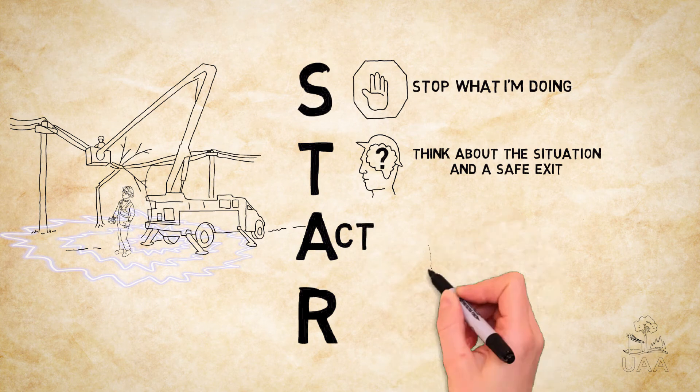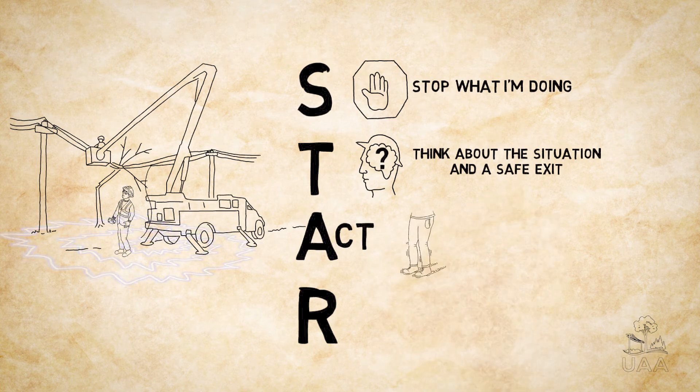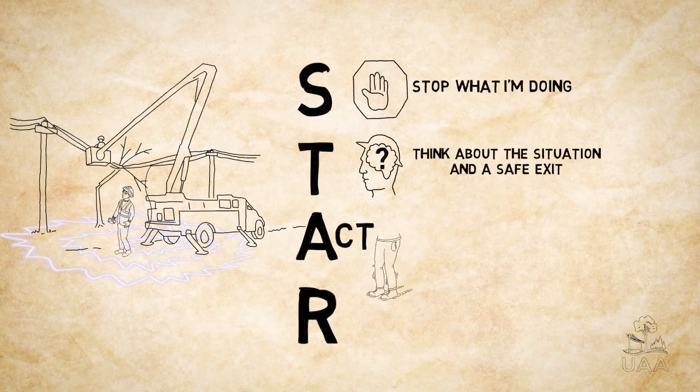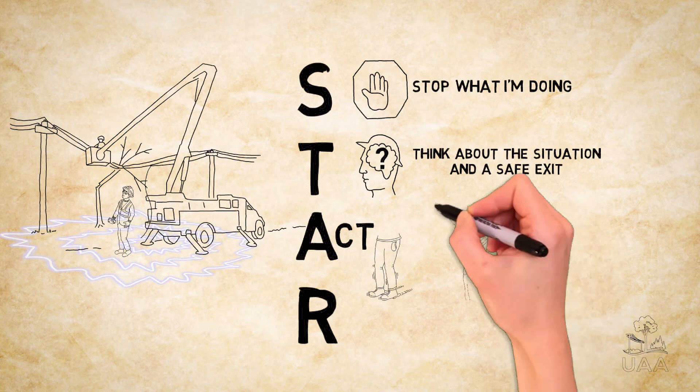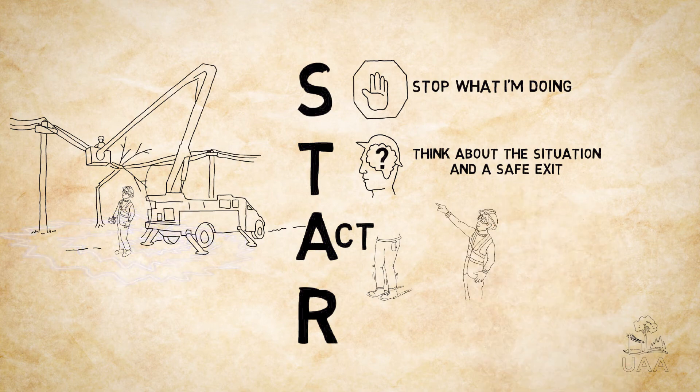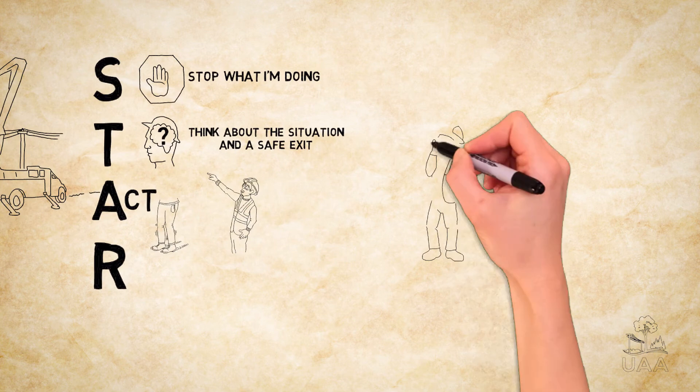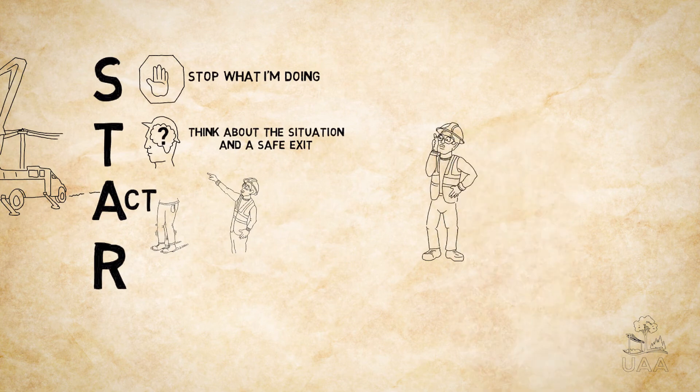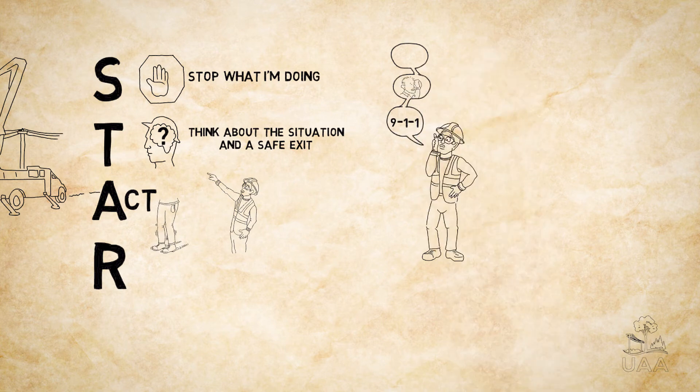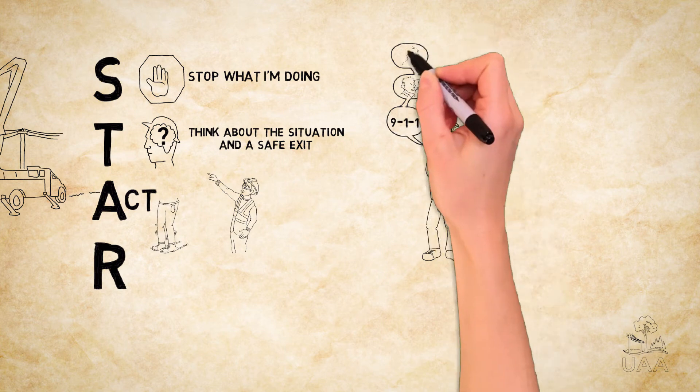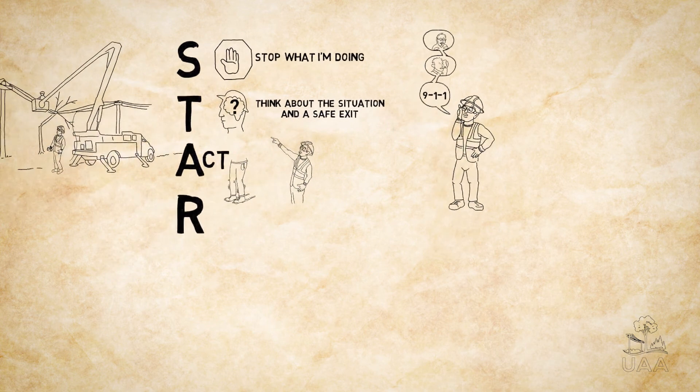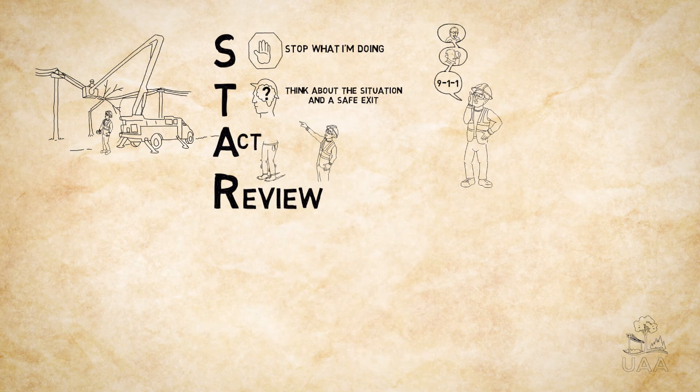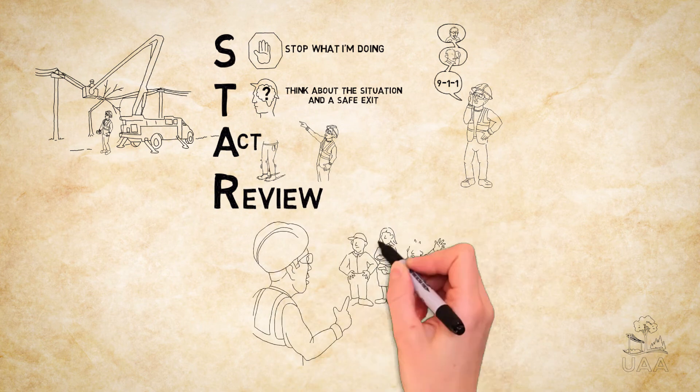Act. From his training on step and touch potential, Alex knows to slowly shuffle his feet together as he leaves the potentially energized area and warn his teammates of the potential hazard on the job site. Alex knows to immediately report the incident and electrical hazard—first by contacting 911, then reaching out to the utility system owner or operator, and finally by notifying his employer. Review. Like Carmen, Alex reflects upon his actions and discusses the situation with his colleagues.